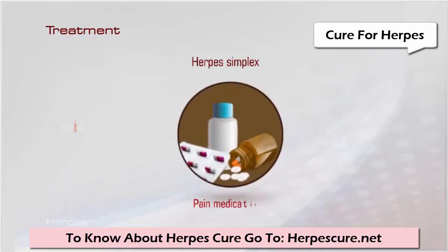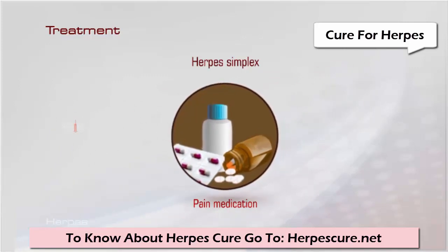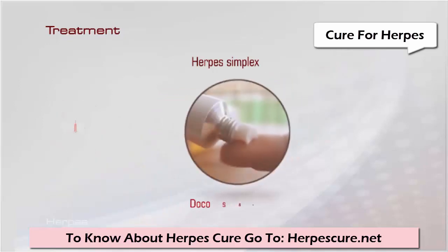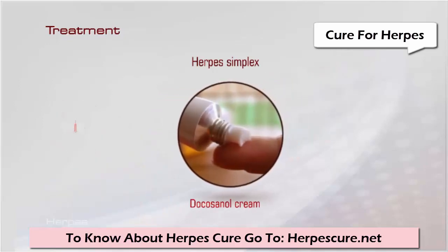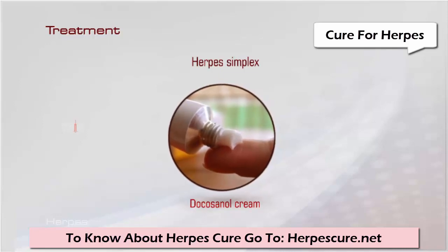Pain medication will be given to control the pain, and narcotics may be given in cases of severe pain. Docosanol cream is recommended for cold sores, applied five times daily over the lesion until it heals, as it prevents entry and multiplication of the virus.